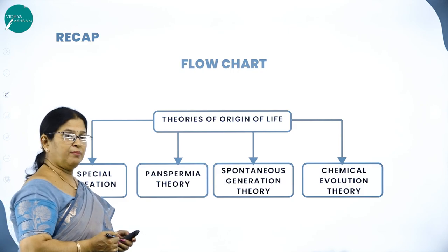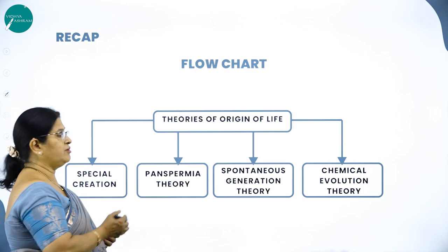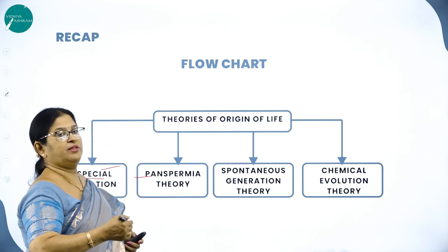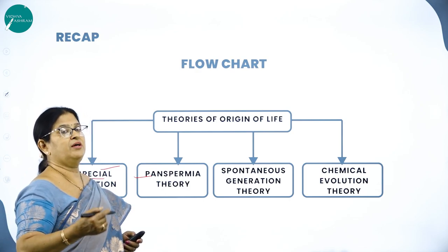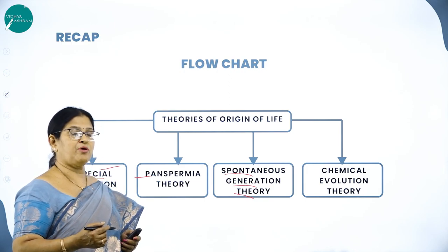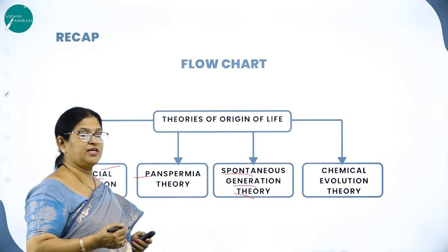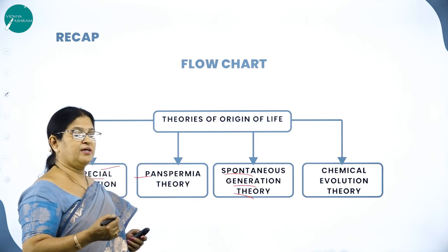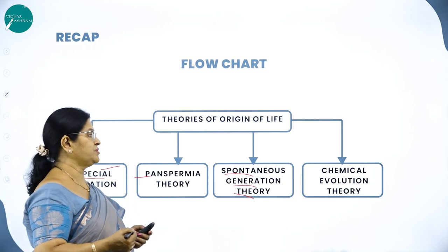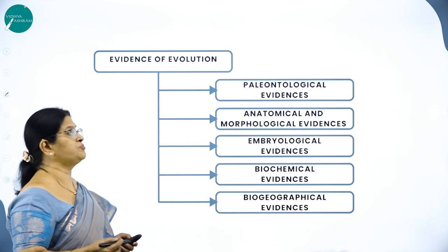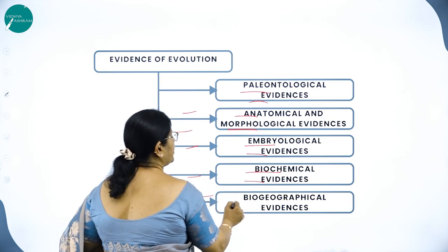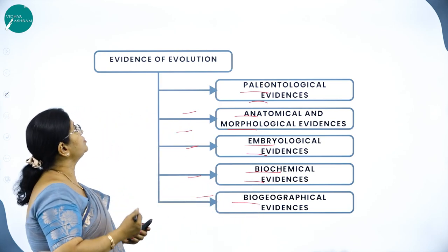A brief recap through flow charts: theories of origin of life include special creation, panspermia theory (spores from the atmosphere fell into the ocean and emerged as life forms), spontaneous generation (abiogenesis — life comes from nonliving things continuously), and chemical evolution (prebiotic gases like methane, hydrogen, ammonia, and water vapor were responsible for formation of complex life forms). Evidences of evolution: paleontological, anatomical and morphological, embryological, biochemical, and biogeographical evidence.